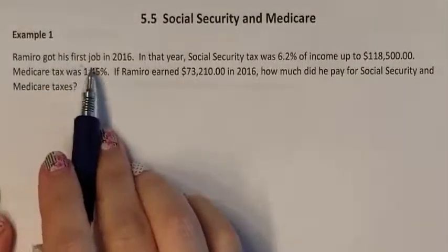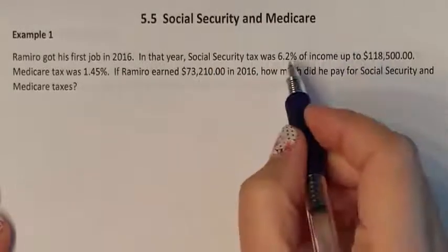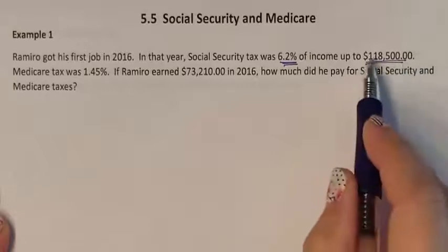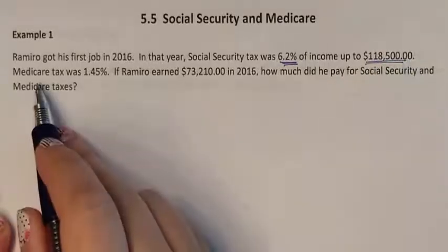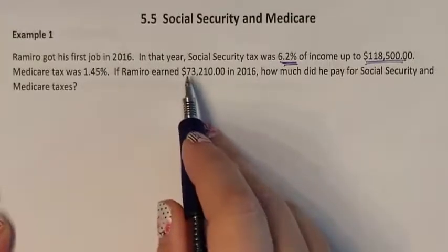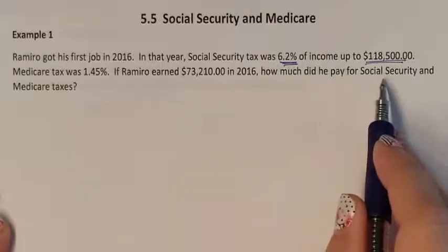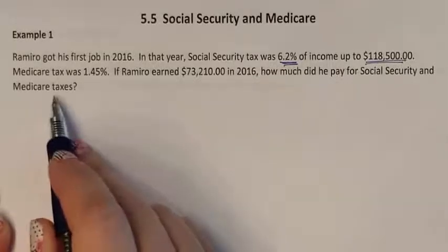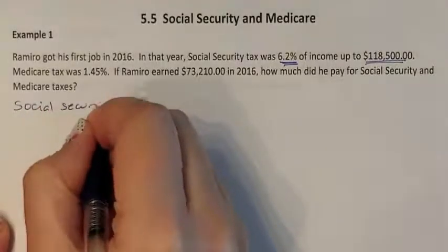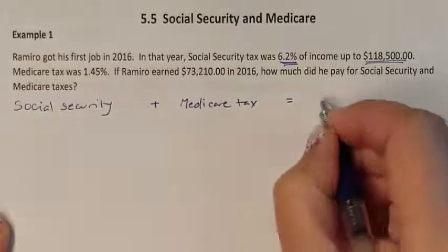Example 1. Ramiro got his first job in 2016. In that year, Social Security tax was 6.2% of income up to a maximum of $118,500. Medicare was 1.45%. If Ramiro earned $73,210 in 2016, how much did he pay in Social Security and Medicare taxes? We're going to first figure out his Social Security, then add that to his Medicare to find his total taxes.